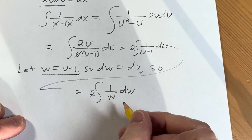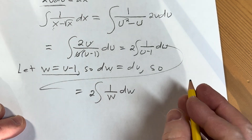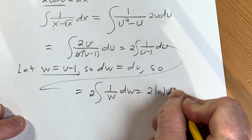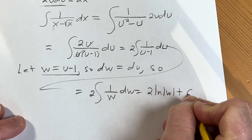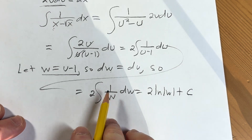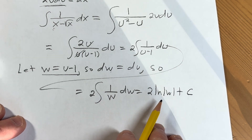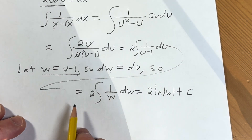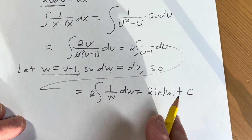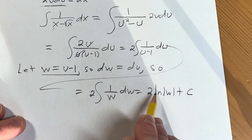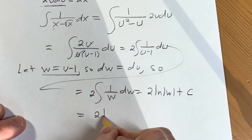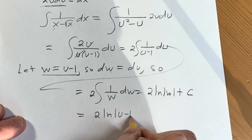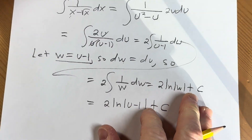At this point we're ready to go, so this will be equal to 2 times the integral of 1 over w, dw. That's a formula: the integral of 1 over w gives you the natural log of the absolute value of w. So this equals 2 natural log of the absolute value of w plus C. And w is u minus 1, so this is 2 natural log of the absolute value of u minus 1, plus C.